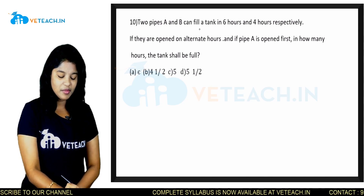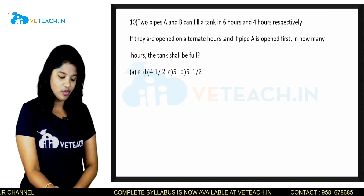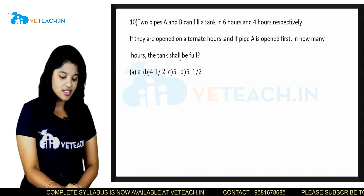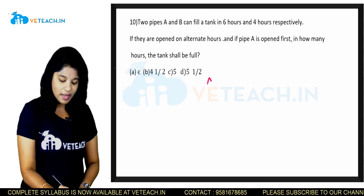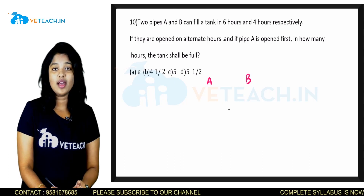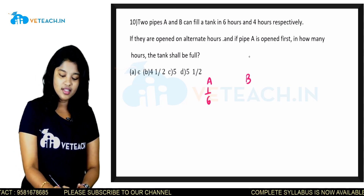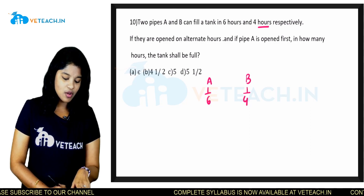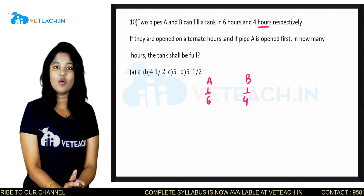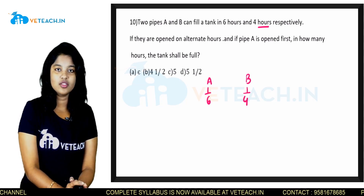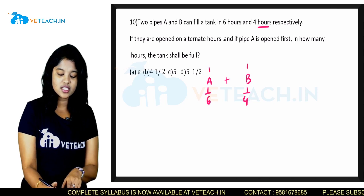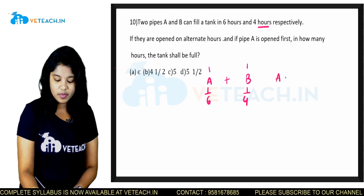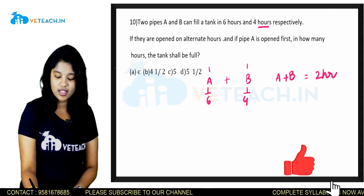Two pipes A and B can fill a tank in 6 hours and 4 hours respectively. If they are opened on alternate hours and pipe A is opened first, in how many hours will the tank be full? Pipe A fills 1/6 per hour; pipe B fills 1/4 per hour. They alternate, so work done in 2 hours = 1/6 + 1/4 = 10/24 = 5/12. This means in 4 hours (2 cycles), 10/12 = 5/6 of the tank is filled.